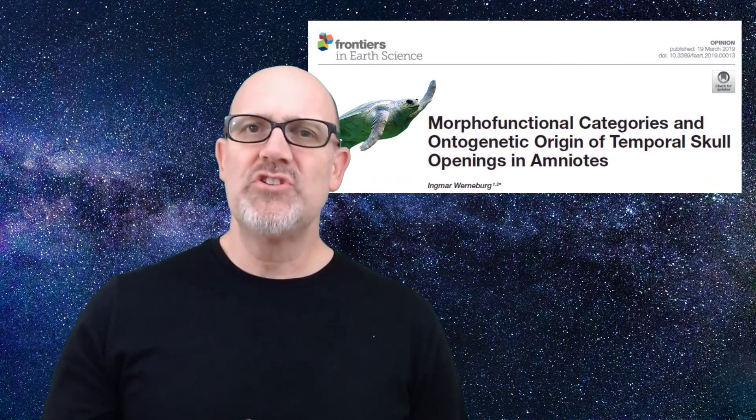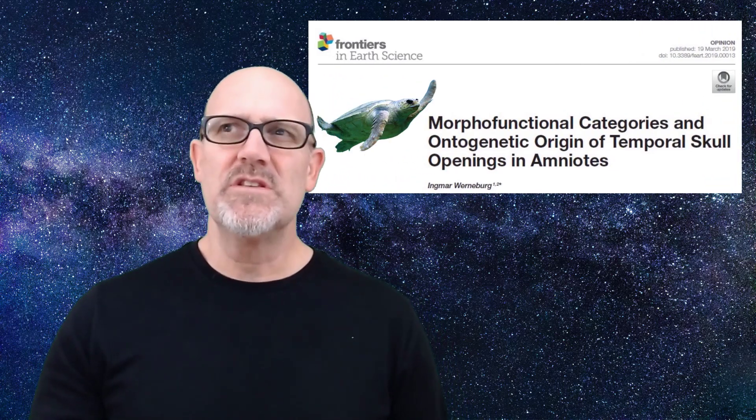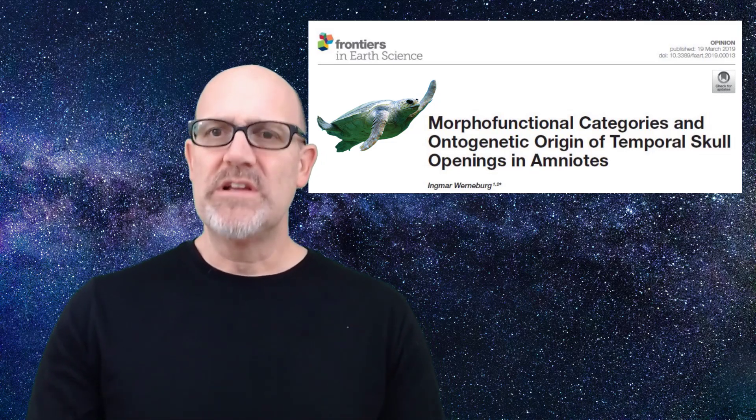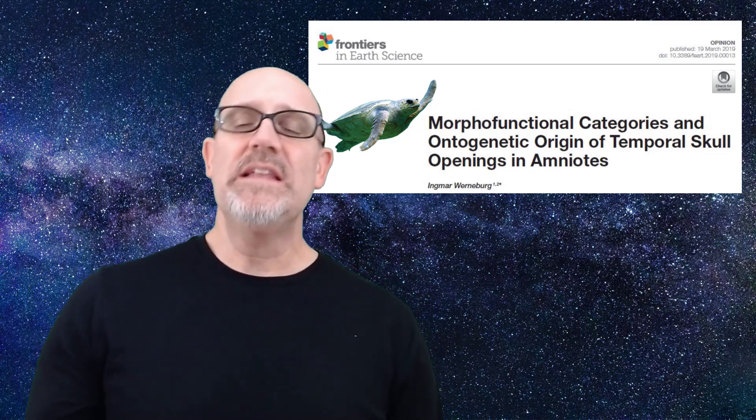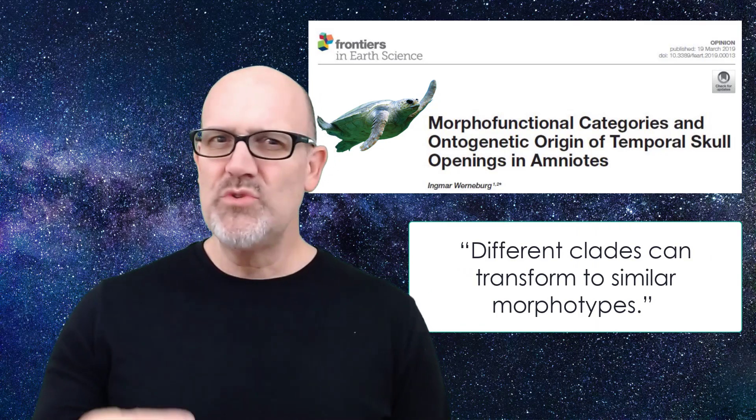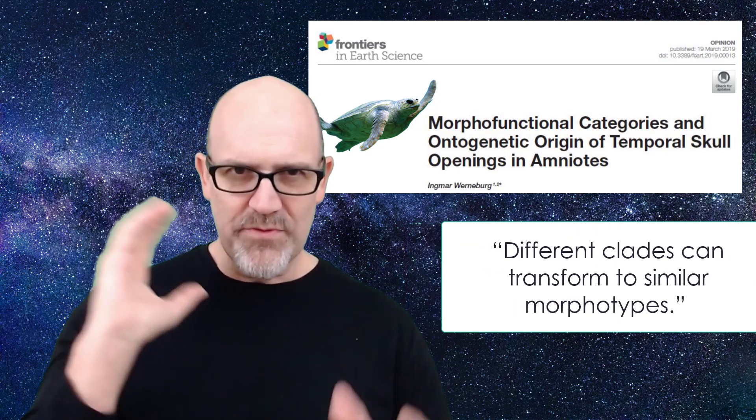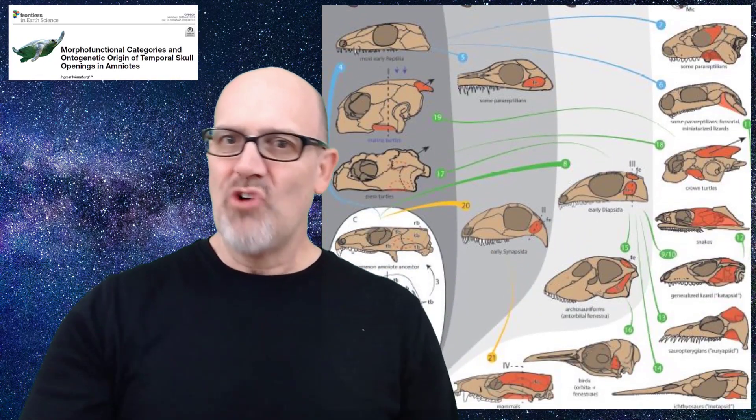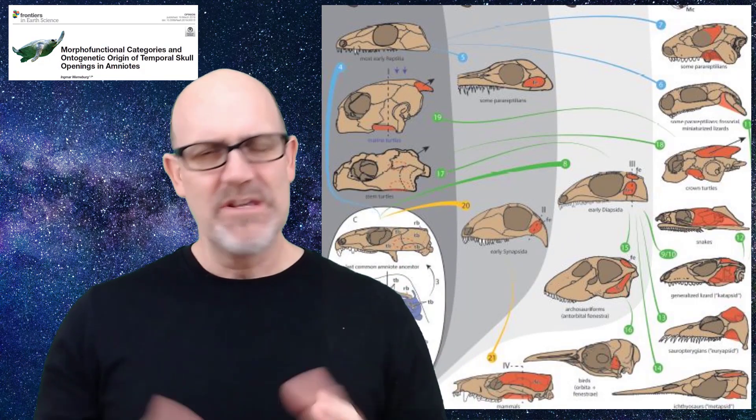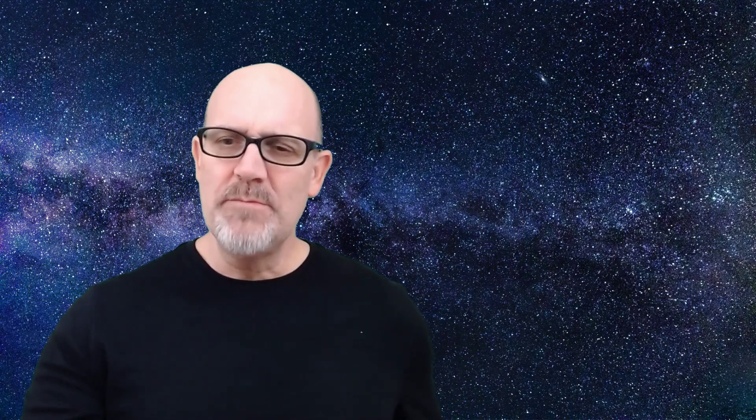But this phenomenon called convergence isn't a rare occurrence. This paper published in 2019 documents the overlap that these holes have with different evolutionary clades. Different clades can transform to similar morphotypes. The diagram describes the plasticity that exists between anapsids, synapsids, and diapsids. It's just not that simple.